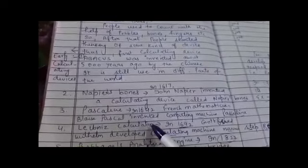Next is Leibniz's calculator. In 1692, Gottfried William developed a calculating machine named Step Reckoner.